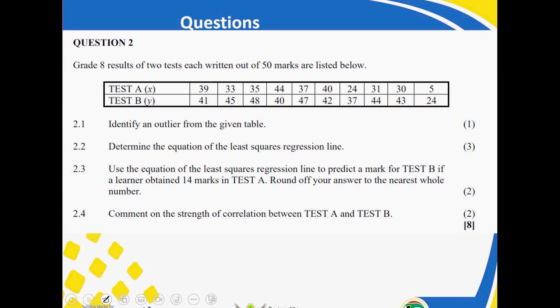Grade eight results of two tests each written out of 50 are listed below. You are given the marks. Identify the outlier. Can you see? Identify. So, you are looking at your scores. You are looking at your scores. There is one that will tell you that I am an outlier. Oh, yes. You will see that there is the score. It becomes an outlier in that case.